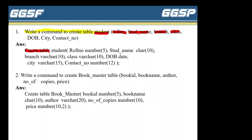The command is: CREATE TABLE student — here we write the table name 'student'. In brackets: roll_number with data type NUMBER, comma; student name with data type VARCHAR2; branch — VARCHAR2; class — VARCHAR2; date_of_birth — data type DATE (no size needed in brackets for DATE); city — VARCHAR2; contact_number — data type NUMBER. Close bracket, semicolon.